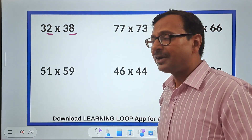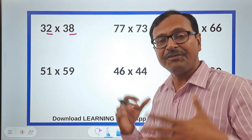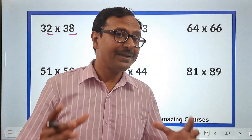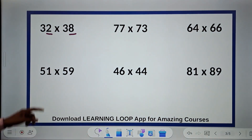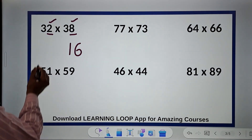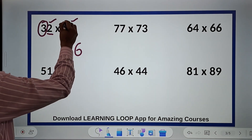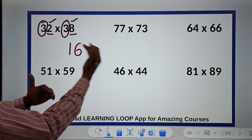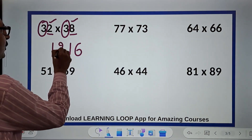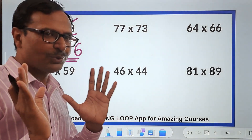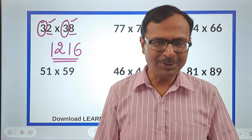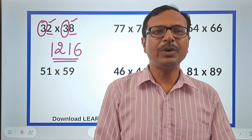Yes, 2 seconds, and everybody will be able to do it after watching this video. Here is the trick: multiply the unit digits 2 and 8 to get 16. The remaining part of the number is 3. Now multiply 3 by its consecutive number, its successor — 3 times 4 is 12. Just write 12 in front, giving you the answer 1216. Even a 7-year-old can do it.